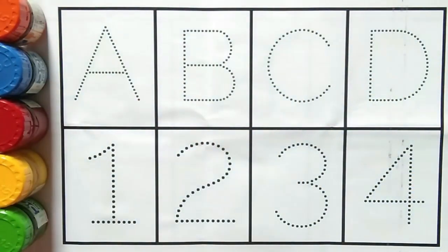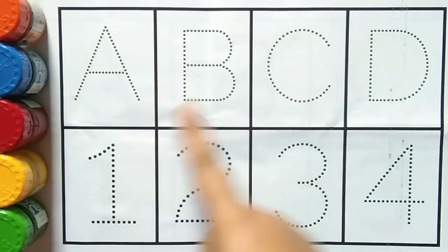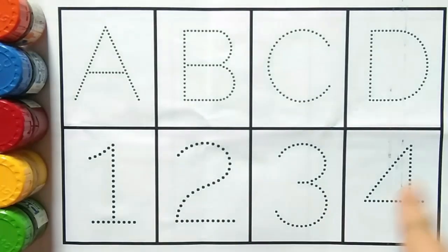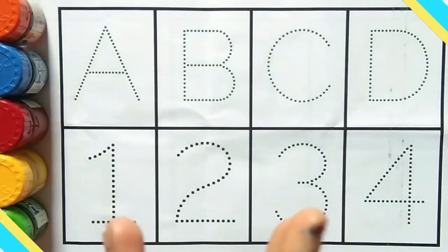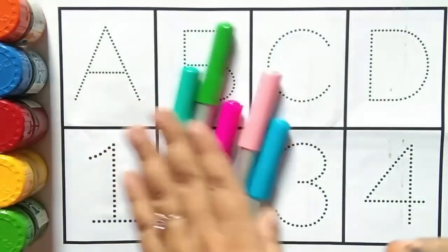Hello, welcome everyone to this new video. In this video we are going to learn and understand ABCD alphabets and 1, 2, 3, 4 numbers counting. So let's start the video. First, let's learn color names.